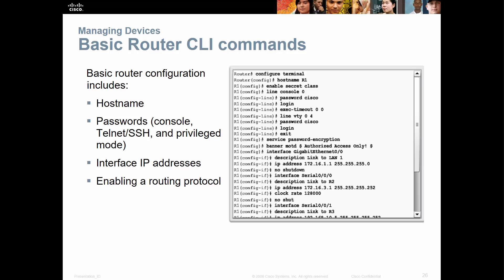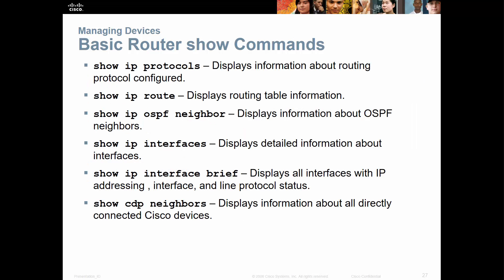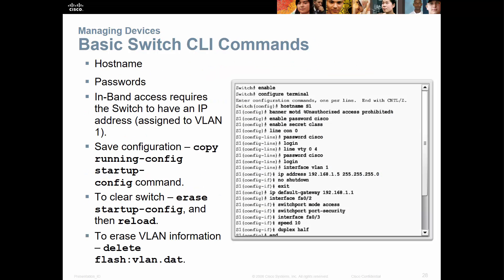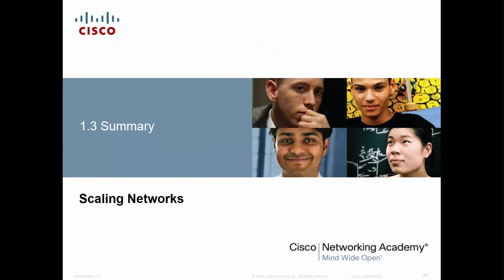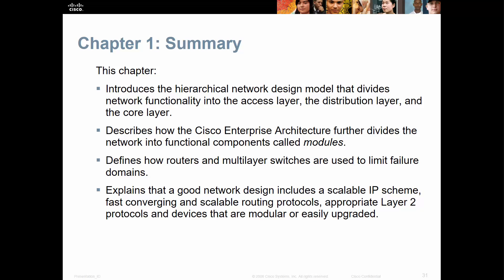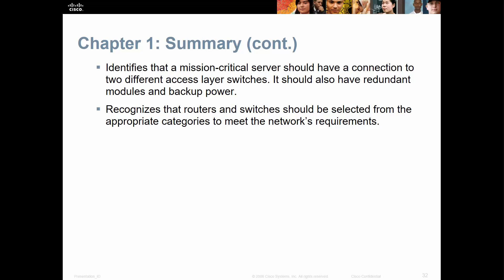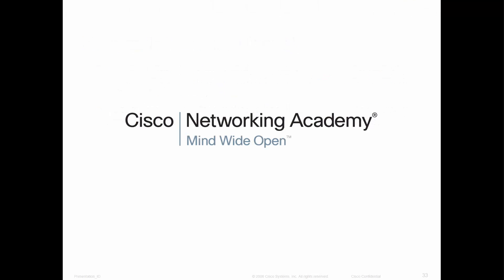Basic commands — things like enable, line console, password encryption, and banners — are all a review from our previous class. The appropriate show commands let you see routing configurations or protocols, such as 'show ip protocol,' 'show ip route,' and the appropriate OSPF and EIGRP show commands. Basic switch commands include VLANs, gateways, and port security with MAC address settings. That's the end of this chapter — pay attention to the hierarchy, the enterprise architecture, understanding how to identify mission-critical components, and redundancy.